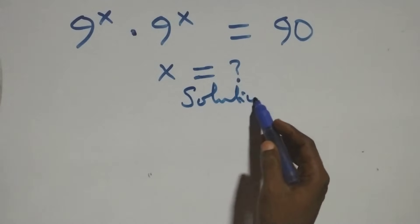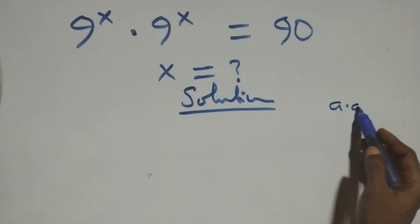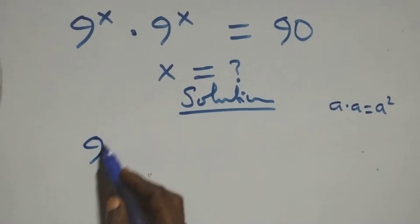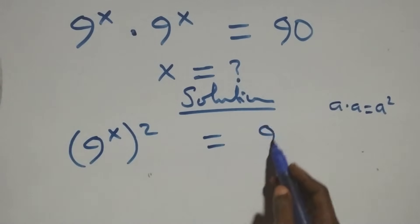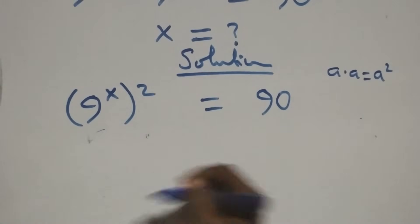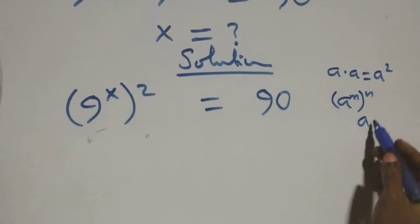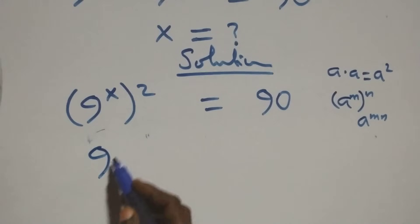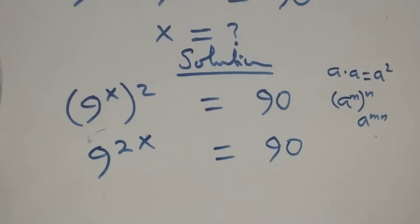Solution from here. What we have here follows from when we have a times a, which is the same thing as a squared. Same thing multiplying — I write this as 9 raised to power x, all squared, equals 90 on this side. This also follows the law of indices: when we have a raised to power n, all raised to power n, the powers multiply, and we have 9 raised to power 2x equals 90.